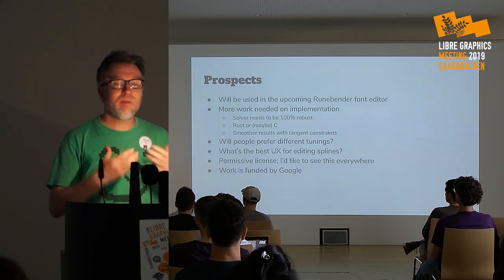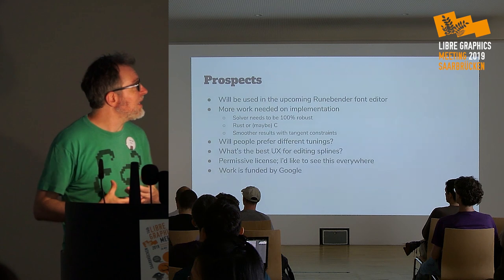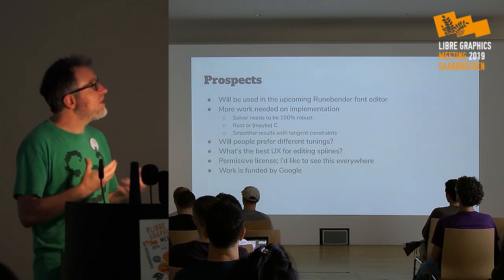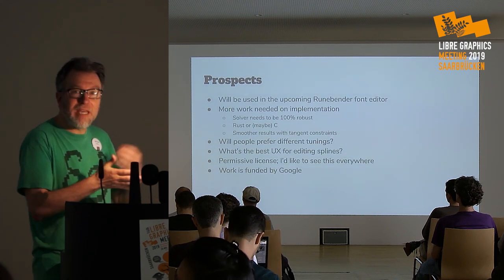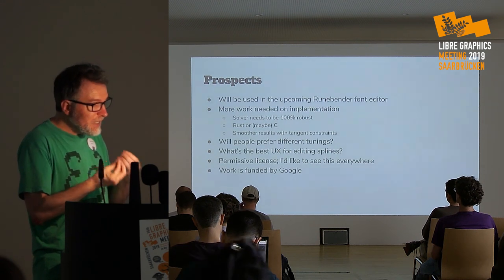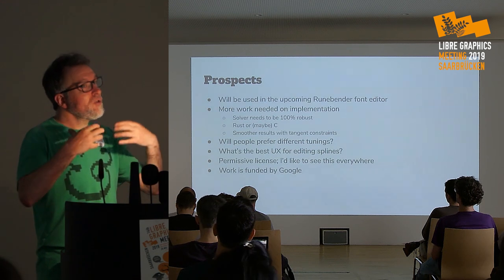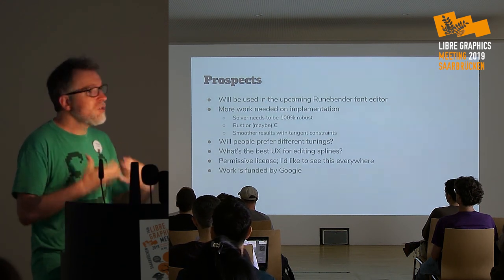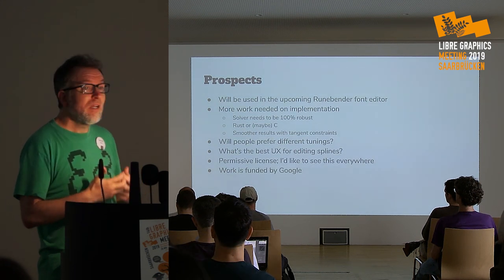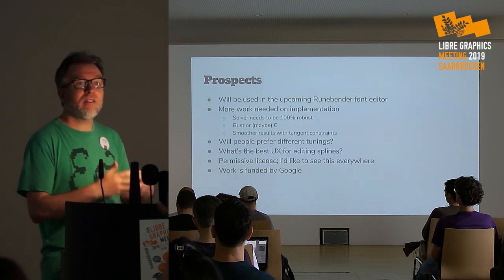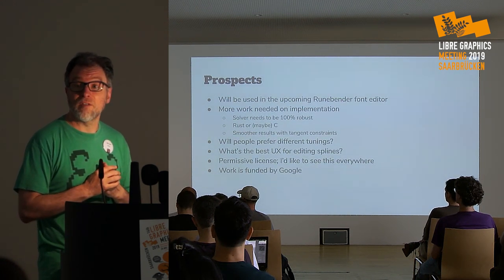This is still research in progress. It will hopefully become the main drawing tool in the upcoming Runebender font editor — you saw a very early Bezier-based preview yesterday, and integrating this spline is the next step. More work is needed: getting the solver from 99% to 100% robust, reimplementing in Rust or C which may help other open source projects, fine-tuning the tangent constraints, and answering whether there is one universal tuning or many. We also need real UI work to enable a natural creative flow. All the work is under a permissive license with no patents. Thanks to Google for funding this work.